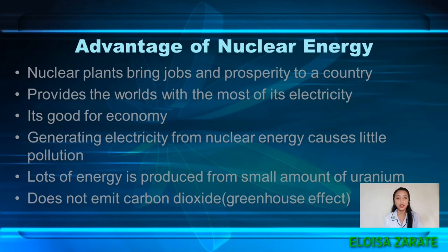And lastly, nuclear energy does not emit carbon dioxide greenhouse gases. Nuclear is a zero-emission clean energy source. It keeps the air clean by removing thousands of tons of harmful air pollutants each year. This reduction in greenhouse gases is a great indicator of how switching to nuclear energy can help reduce our effect on global climate change in the long run.